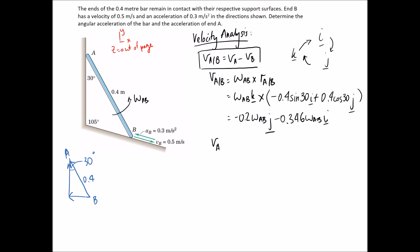Moving on to the velocity of A: this point has to stay in contact with the wall, so we need to decide which way it's going. I'm going to assume it goes down — if you assume the wrong direction it will come out negative and you can just flip it. Since end B is going down the ramp, end A will go down the wall. So the velocity of A in vector form is just negative VA j, since it can only move in that one direction.